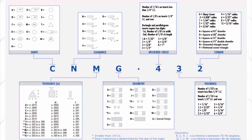This is the sheet that I've used for years, or one similar to it, where it tells you what every number and letter means in the insert designation or nomenclature — CNMG 432, for example: shape, clearance, inscribed circle, corner, etc. Find one, print it out, keep it in your toolbox or use it as a training tool for people you're trying to show about machining and what we do.